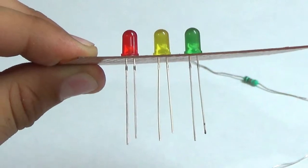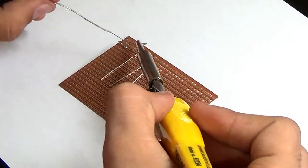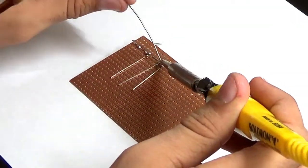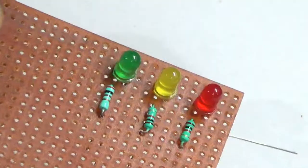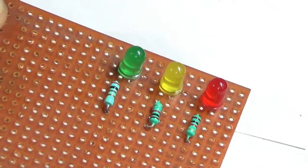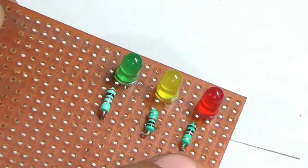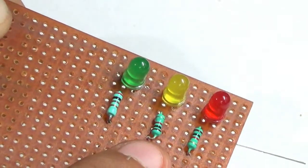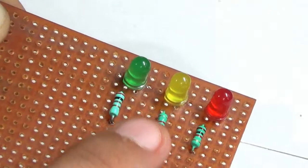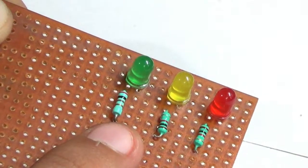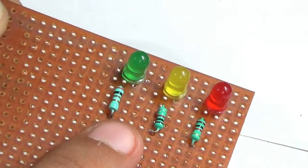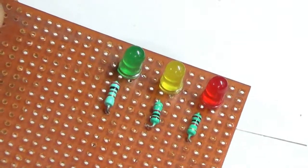Now connect one pin of the 1k resistor to red, one pin of the other 1k resistor to yellow, and the 200-ohm resistor's one pin to green, and connect all the other pins together of the resistors.